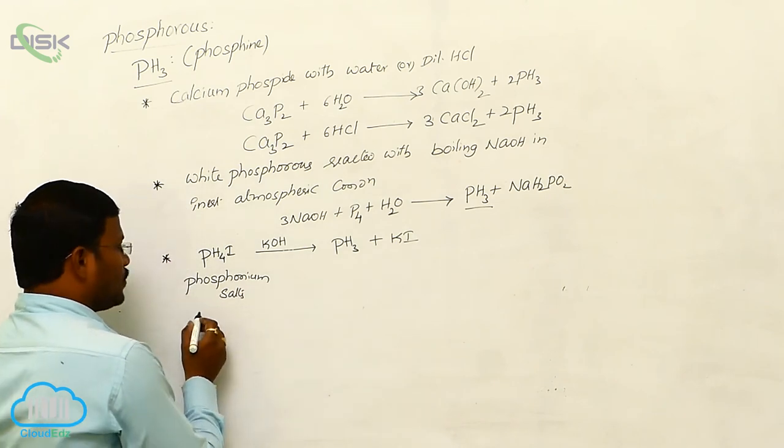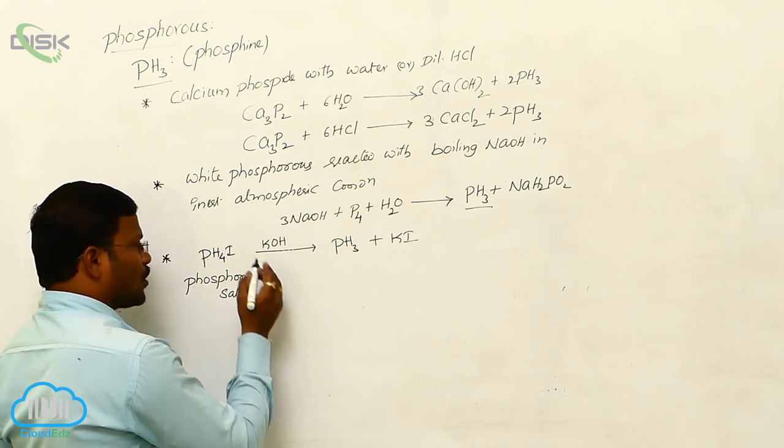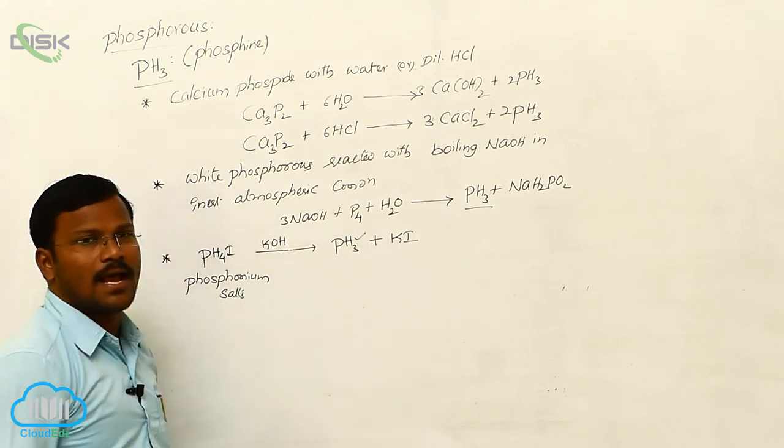And also, a small amount of phosphonium salts when reacted with potassium hydroxide also yields the formation of phosphine as our compound.